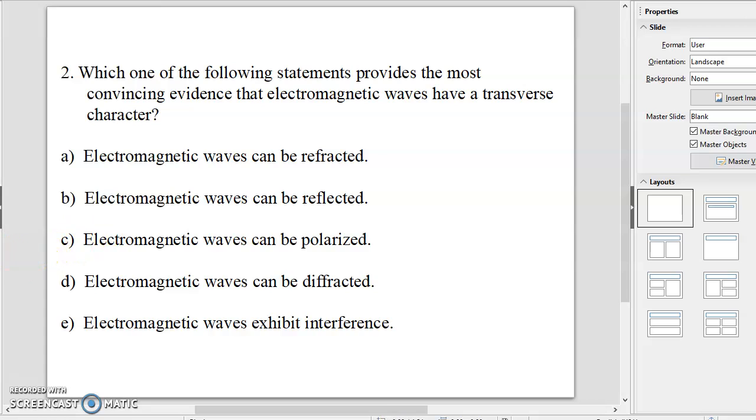The next one. A human hair is placed directly in front of the opening of a laser pointer. The light has a wavelength of 532 nanometers. On a screen 2 meters in front of the laser, a diffraction pattern is observed with minima spaced 0.0164 meters apart. Determine the approximate thickness of the hair. And the answer for that one is D, 65 microns.